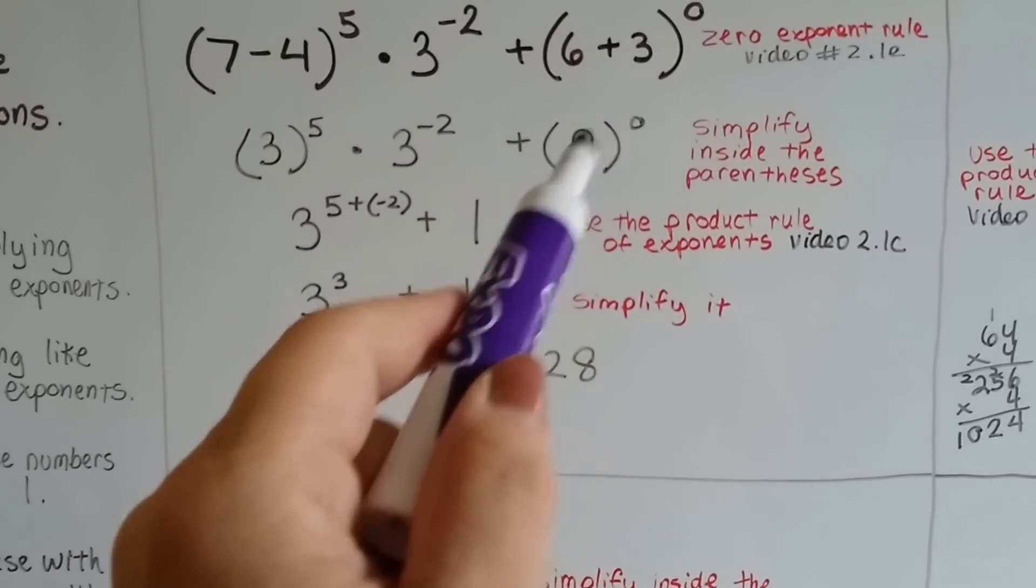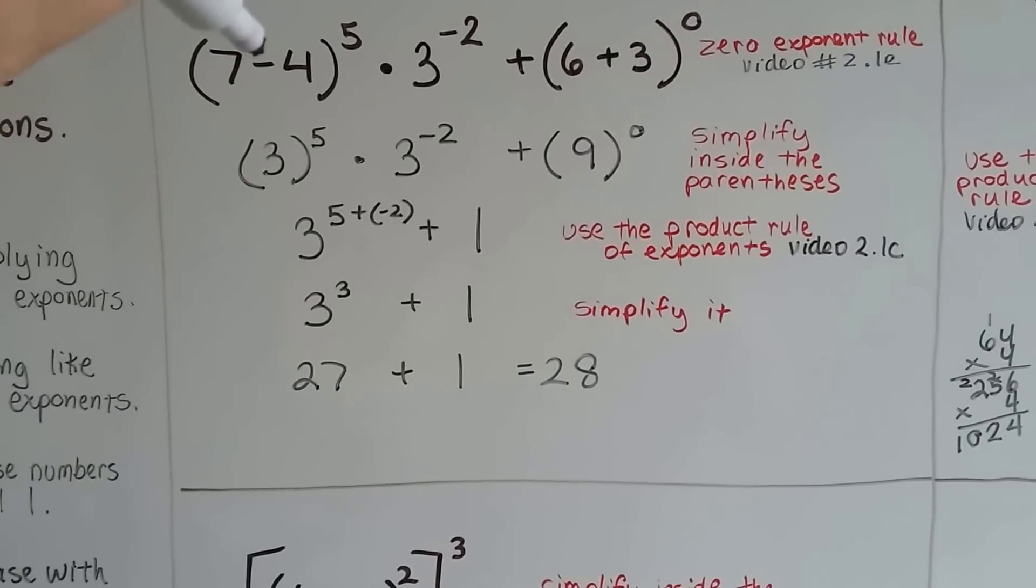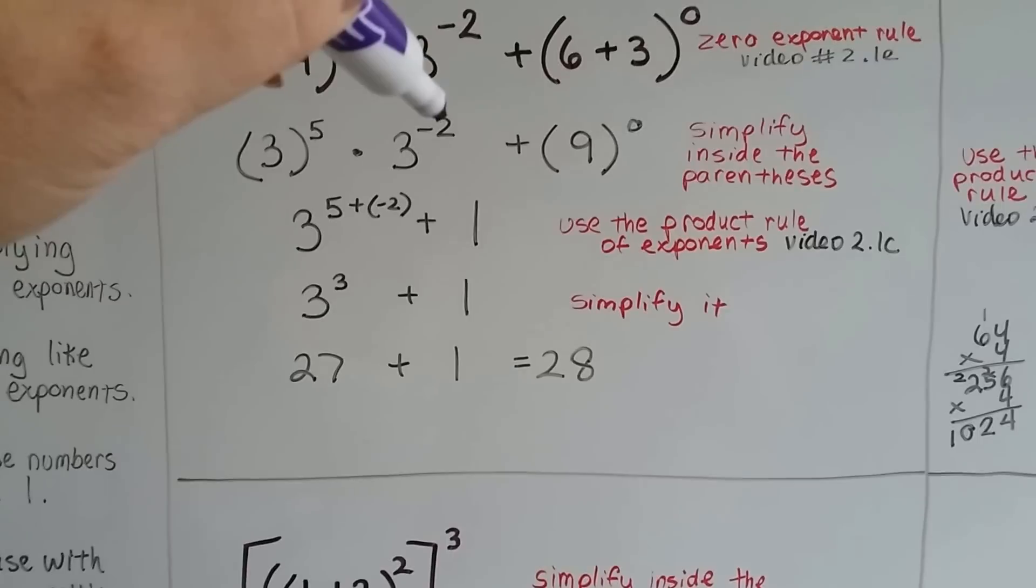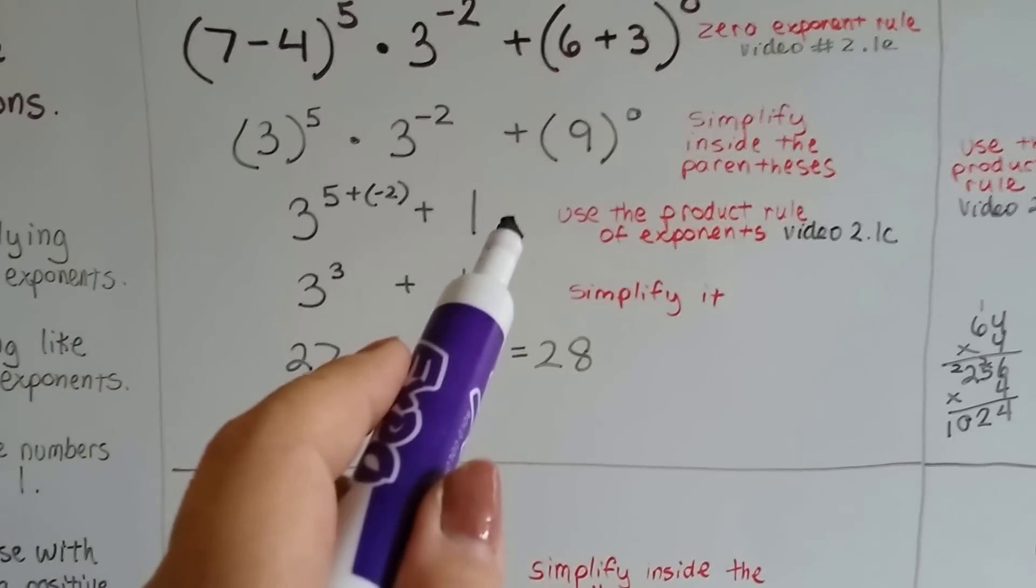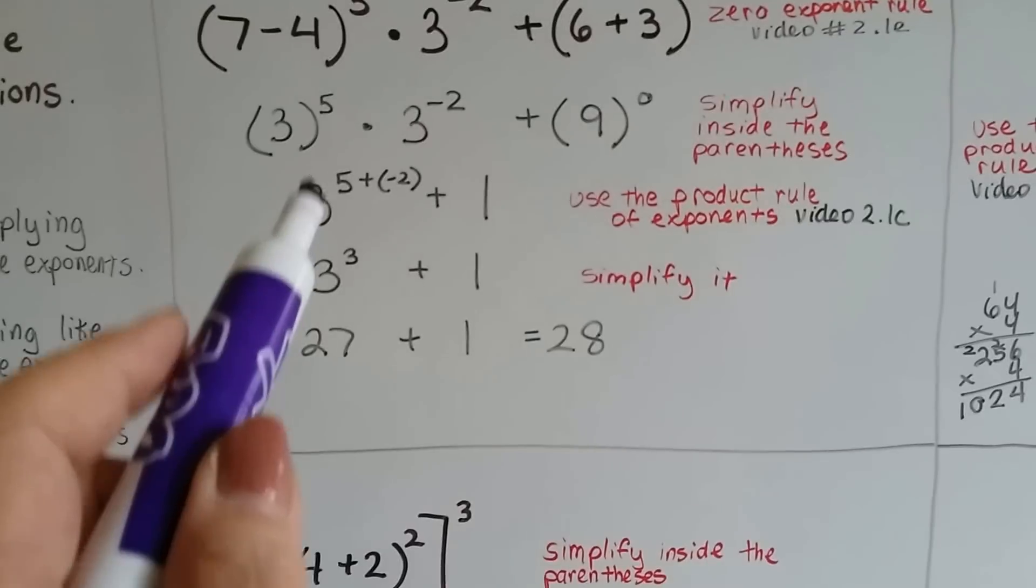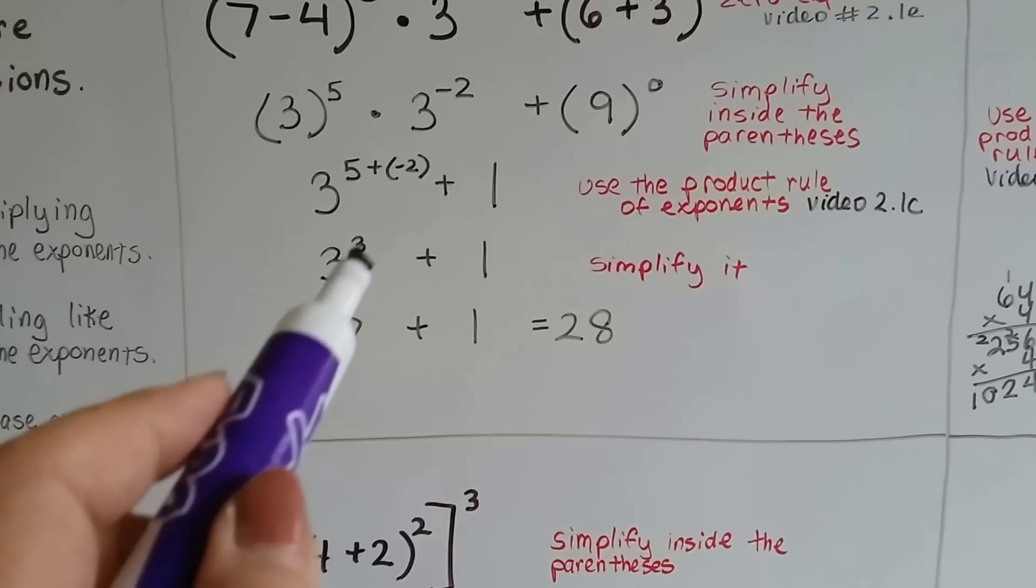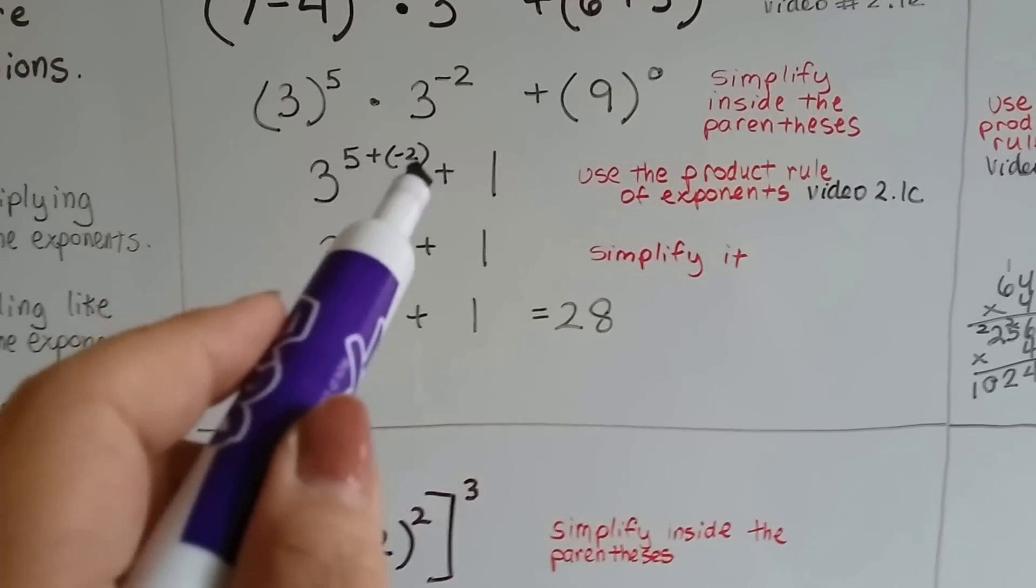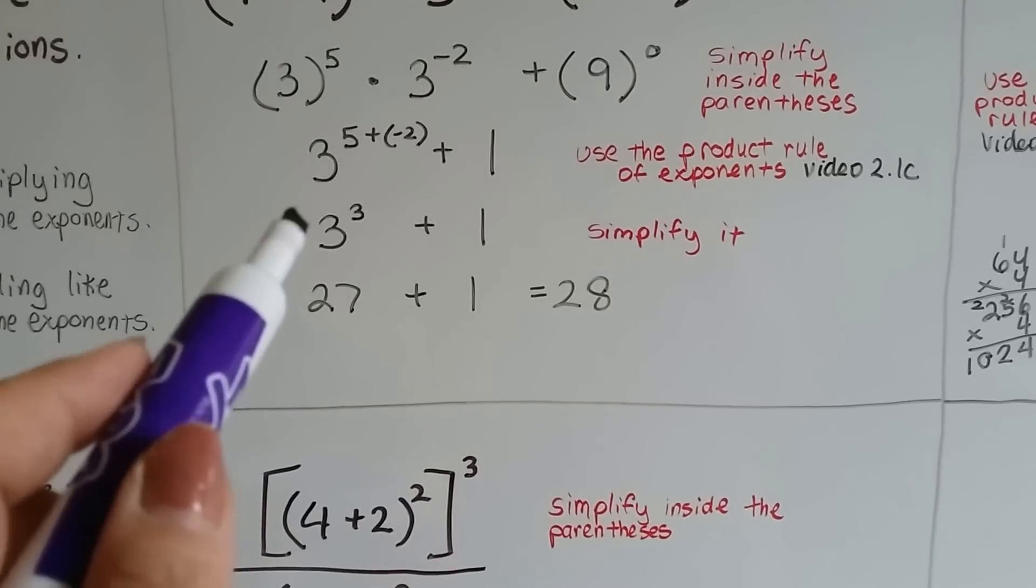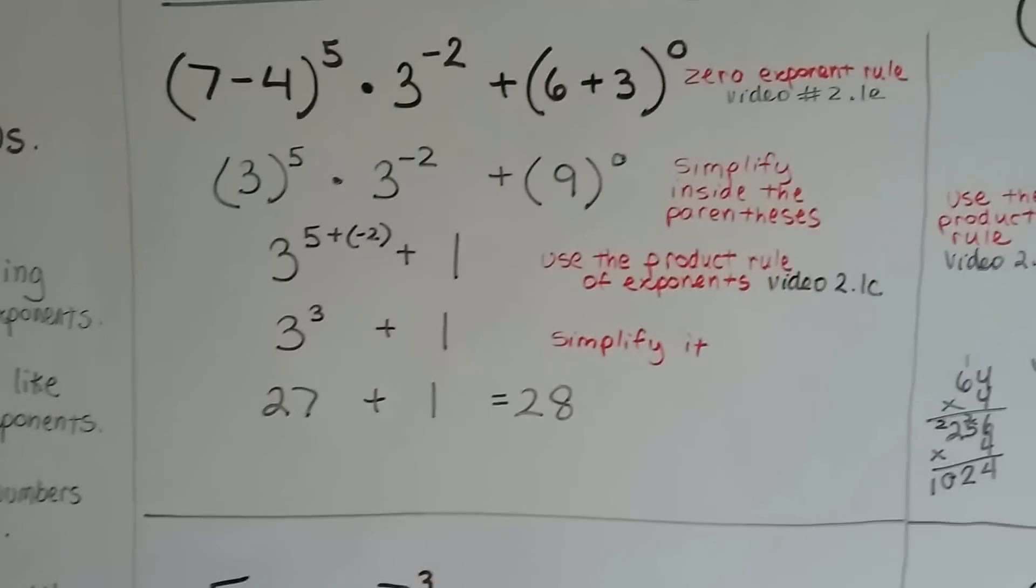So, we've got 9 to the 0 power, it's going to be a 1. Inside of here, we've got 7 take away 4 is 3, so we've got 3 to the 5th power. But now we've got 3 to the negative 2. So, we use the product rule of exponents, that's in video 2.1c, and we do 3 to the 5th power plus a negative 2. That's going to give us 3 to the 3rd power. 5 plus a negative 2 is 3. So, that means we can now simplify it as 3 times 3 is 9 times 3 is 27 plus the 1. It's a 28.